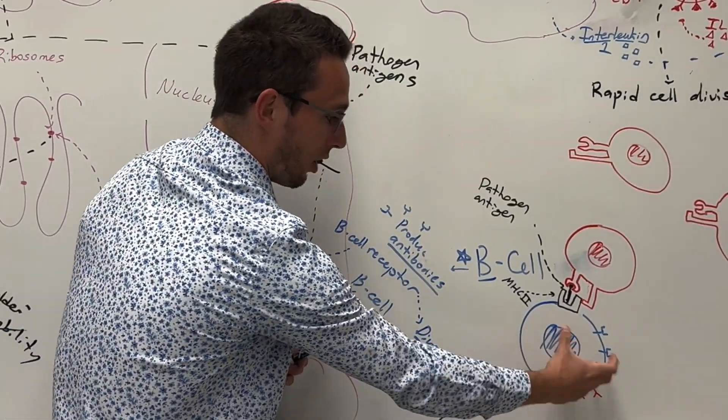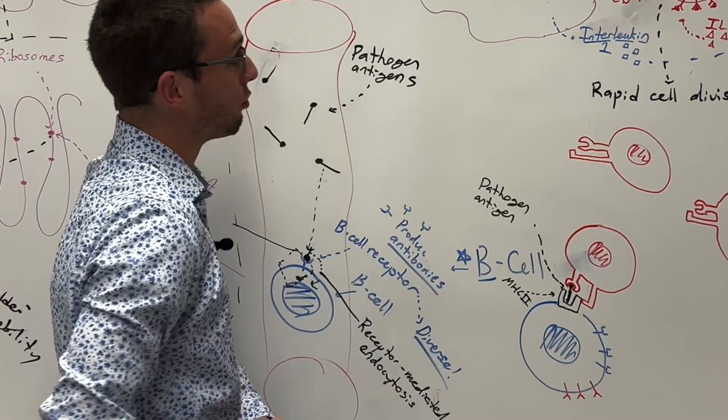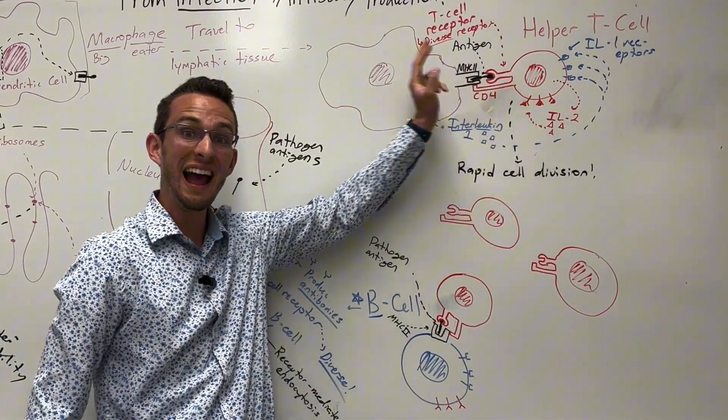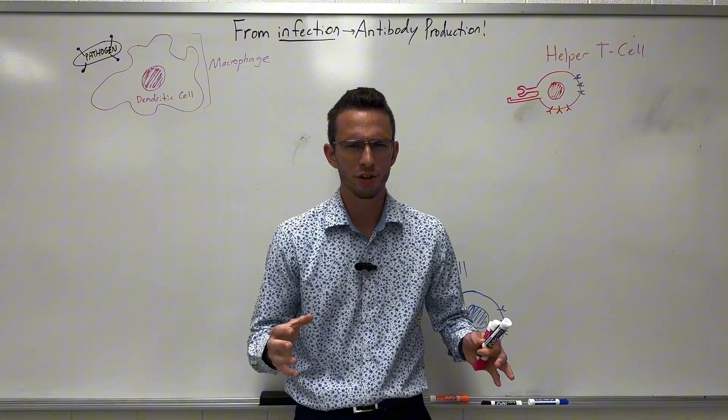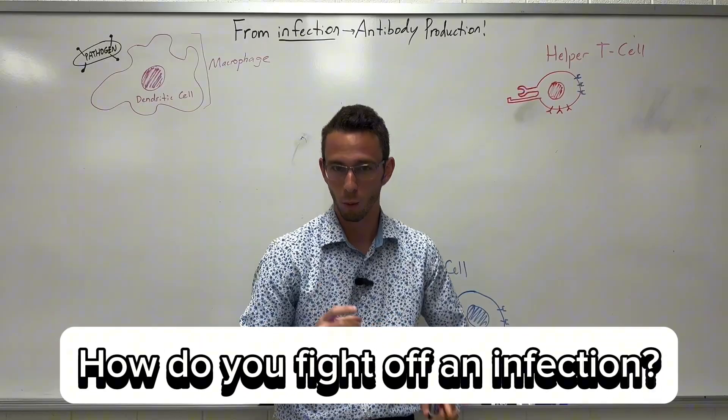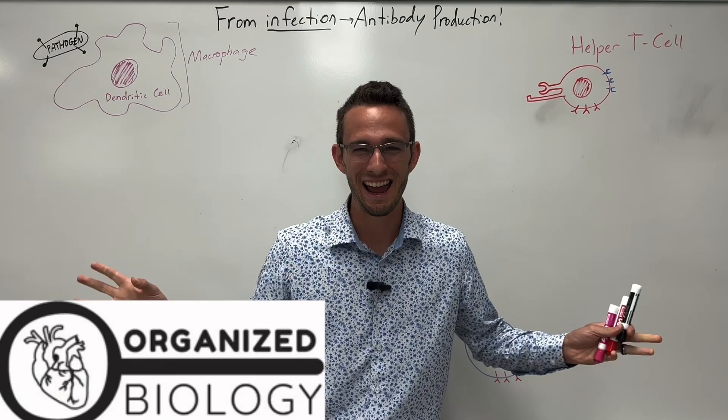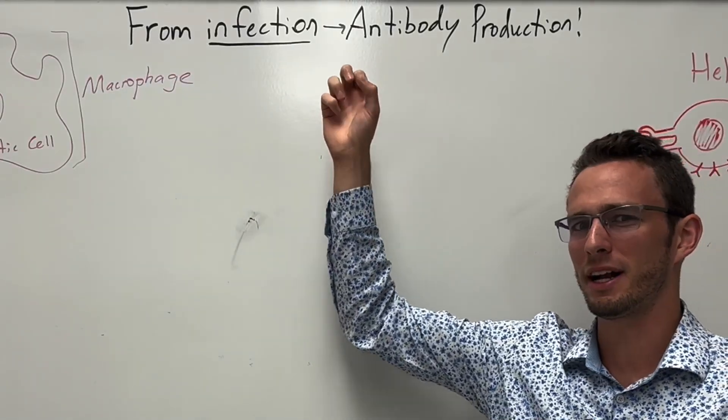We've got our B cell with the flag holder, MHC2, with the antigen binding to the T cell that was already activated previously. And this is where the magic happens. Do you ever wonder how once you get sick, how your body actually fights off that pathogen? We're going to go through that whole process today. Hey everybody, Organized Biology here, and today we're talking about infection to antibody production.